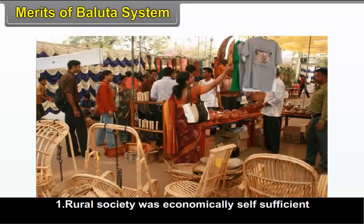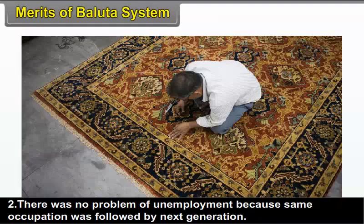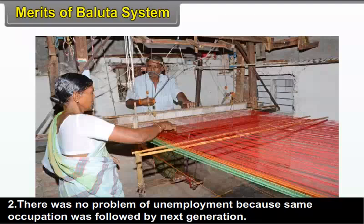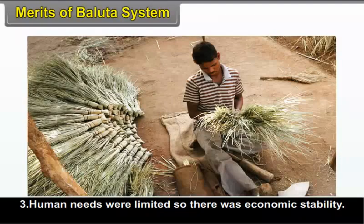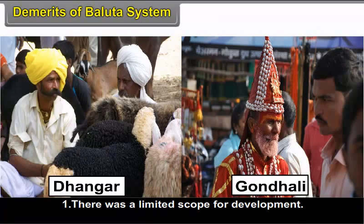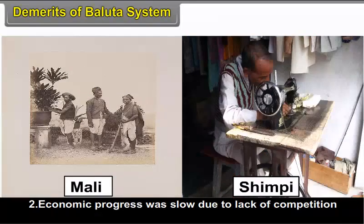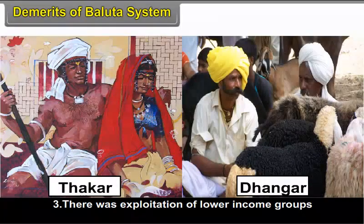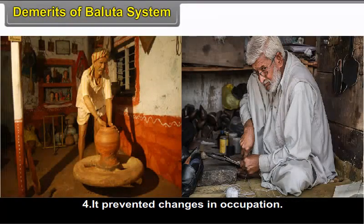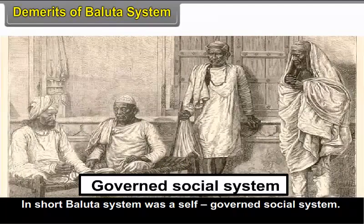Merits of the Baluta system: Rural society was economically self-sufficient. There was no problem of unemployment because the same occupation was followed by the next generation. Human needs were limited, so there was economic stability. There was social integrity. Demerits: There was a limited scope for development. Economic progress was slow due to lack of competition. There was exploitation of lower income groups. It prevented changes in occupation. Due to social reforms today, one can choose any occupation as per their ability and willingness.